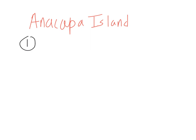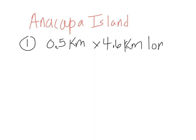First we have to get our area by multiplying length times width, because our formula for density is population over area. It doesn't give us our area directly. It says it's 0.5 kilometers long times 4.6 kilometers wide. It's not a perfect rectangle — it's kind of long and skinny — but we use those basic average measurements. Multiply them together and you get 2.3 kilometers squared.